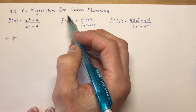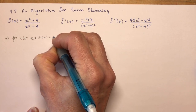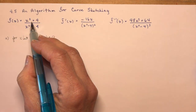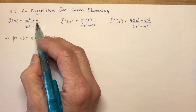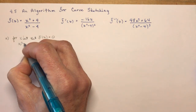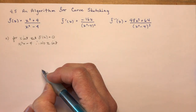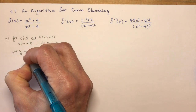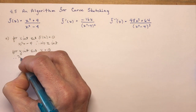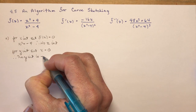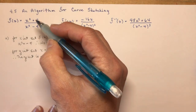For the x-intercept, set f(x) equal to zero. A big mistake students often make: if you get x² = −4, they'll jump and say plus or minus two, but there are no x-intercepts because x² equals a negative number has no real solution. For the y-intercept, set x equal to zero: zero plus four divided by zero minus four gives −1. Notice I didn't say y = −1 as that would refer to a horizontal asymptote.